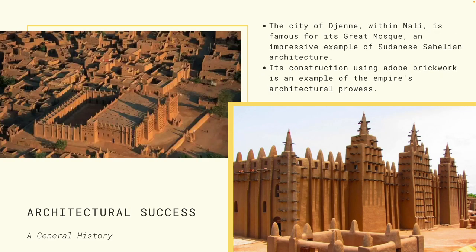The city of Djenné within Mali is famous for its Great Mosque, an impressive example of Sudanese-Sahelian architecture. Its construction using adobe brickwork demonstrates the empire's architectural prowess. These structures made from red mud and clay are stunning, and remarkably they are still standing and still in use today.